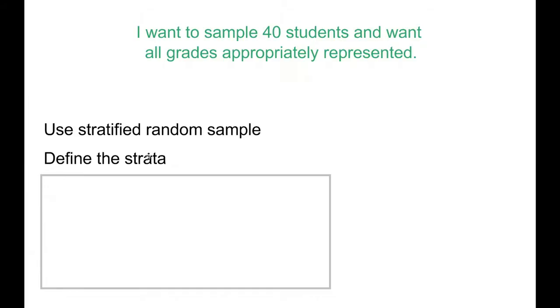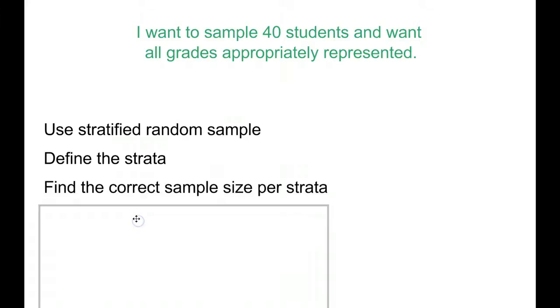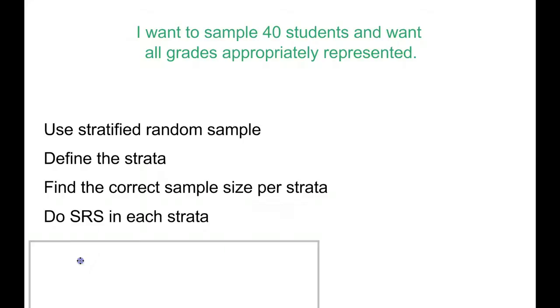Defining our strata, each of the categories would be each of the grades. So 9th grade would be one category or strata, 10th grade, 11th grade, 12th grade. The correct sample size per strata, we'll look at that in a second, and then we're going to do a simple random sample within each strata to actually pick our people.